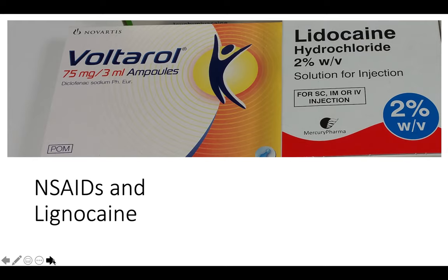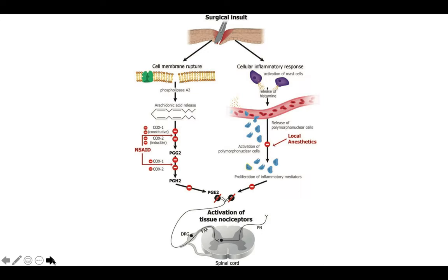NSAIDs and lignocaine are available to everyone and provide very good analgesia. When surgical incisions occur, there is disruption of the cell membrane, release of arachidonic acid, and production of prostaglandins PGG2 and PGH2 — this is where NSAIDs act. The surgical incision also causes a cellular inflammatory response with activation of mast cells releasing histamine, which activates polynuclear cells. This is where lignocaine works — it blocks neutrophil priming. Activated neutrophils amplify the inflammatory response, so local anesthetics act as anti-inflammatory agents, causing down-regulation of neutrophil degranulation.